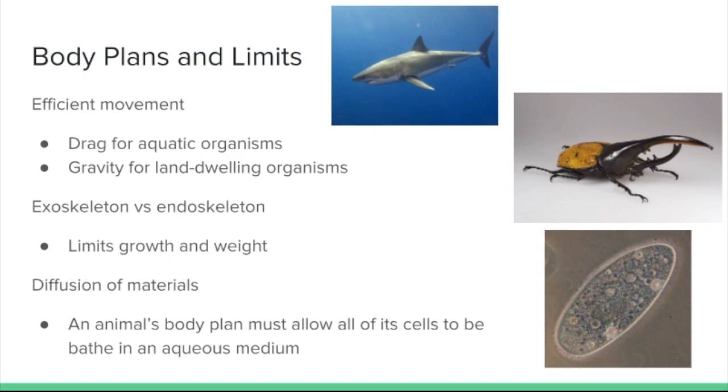Endoskeletons are what mammal-type organisms have, where you have a calcium carbonate frame inside the body and the body tissues grow outwards from that skeleton. Again, you still have some limitations because if the skeleton is too heavy that's going to prevent efficient movement. Another limitation is just the ability to move materials in and out of an organism's cells. It's critical that organisms be able to exchange materials.